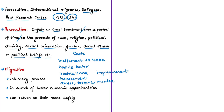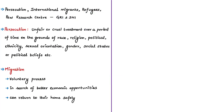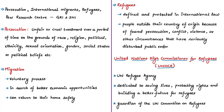As a result of persecution, habitual residents in a country may cross international borders to avoid it. The terms migrant and refugee cannot be used interchangeably. Migration is a voluntary process — a migrant crosses a border seeking better economic opportunities and can safely return home. A refugee, by contrast, is unable to return to their homeland safely, which is the key distinction between the two even though both involve movement across borders.